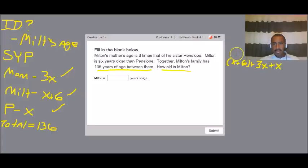So we have Milton right here. We have mom right here and we have Penelope right here. And then together they're equal to 136.